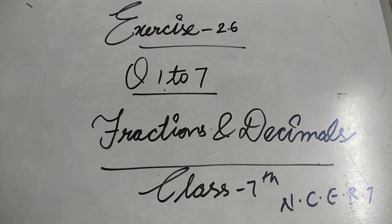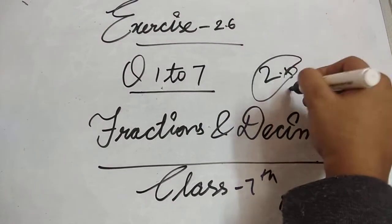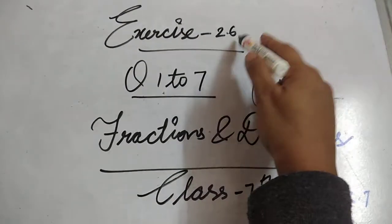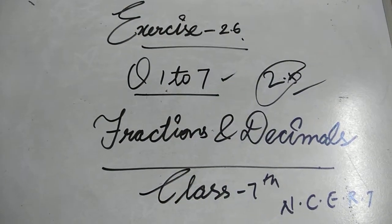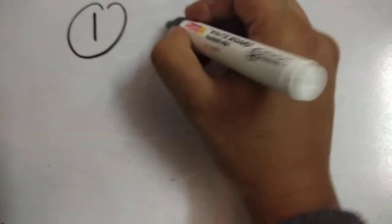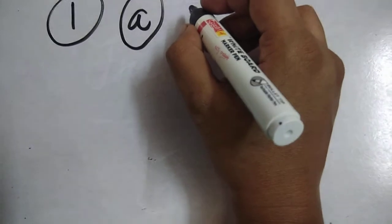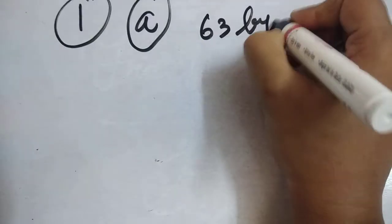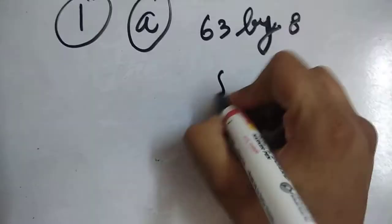Namaskar to everyone. In the previous class we already discussed Exercise 2.45. In this class we will discuss Exercise 2.6 question number 1 to 7. So students, let's start. In question number 1, divide the following whole numbers by 8.